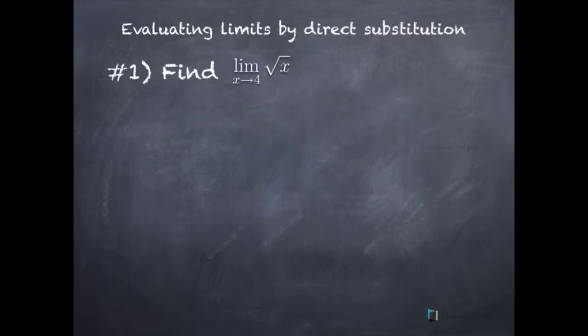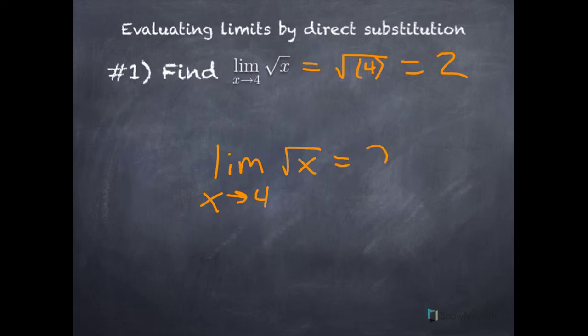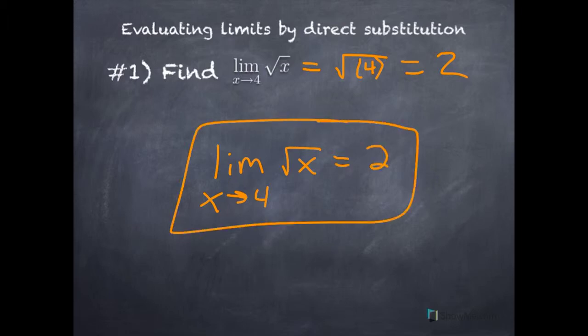Let's do an example of evaluating a limit by direct substitution. This problem says we're supposed to find the limit of the square root of x as x approaches 4. This is pretty simple — all we have to do is replace x with 4. When substituting, you should use parentheses. The square root of 4 is 2, so the limit as x approaches 4 of the square root of x equals 2.